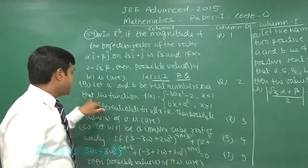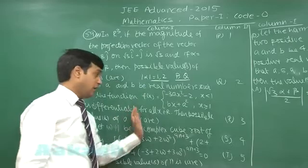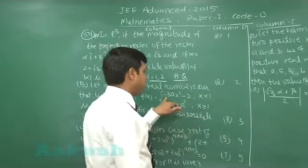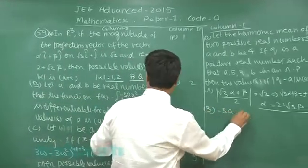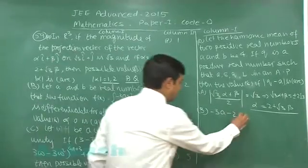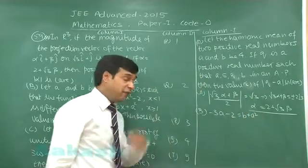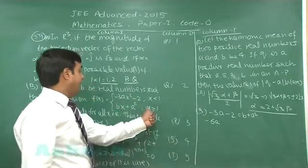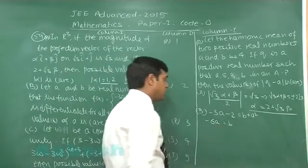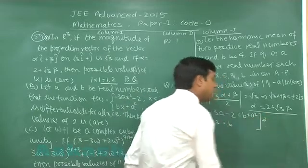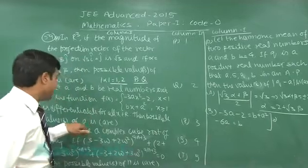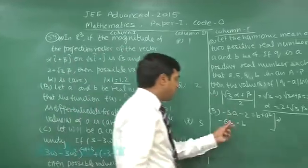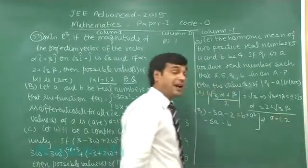Next, let a and b be real numbers such that the function f(x) is differentiable. Differentiable implies continuous, so applying continuity at x=1 gives: minus 3a minus 2 equals b plus a-squared. Applying differentiability at x=1: the left-side derivative gives minus 6a and the right side gives b. Substituting b equals minus 6a back into the continuity equation and simplifying gives a equals 1 or 2, again options P and Q.